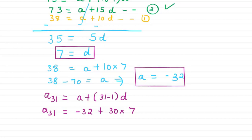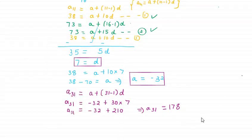So we can use these values to get the value of A31. So that is minus 32 plus 210. From here after solving we will get A31 equals to 178.